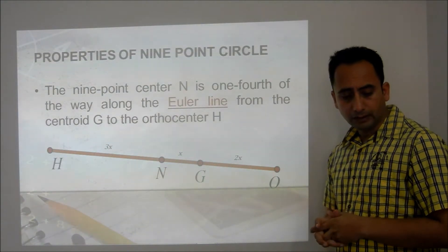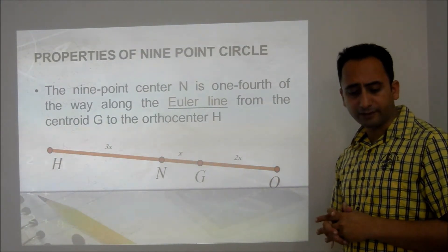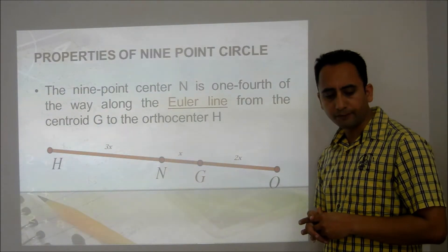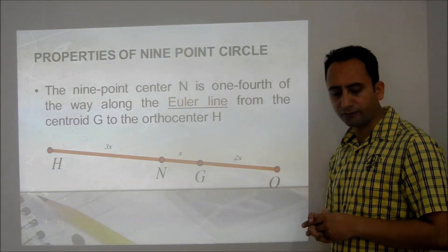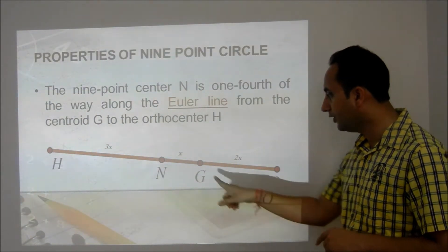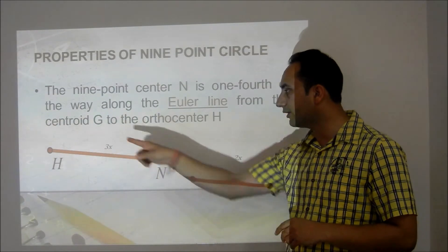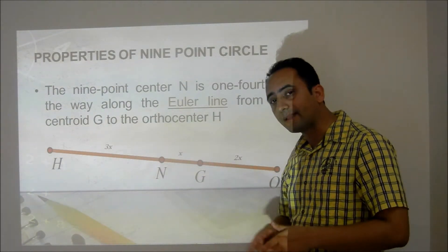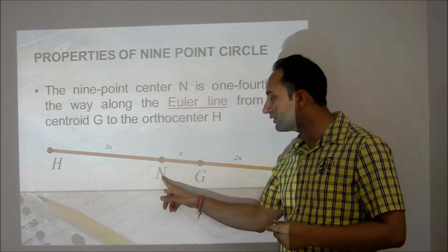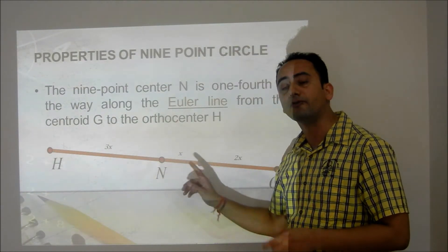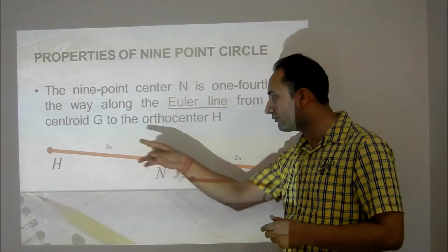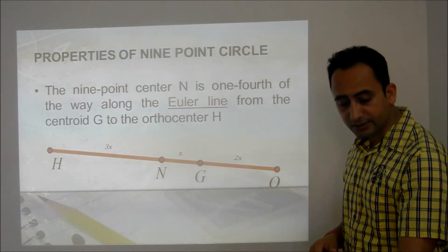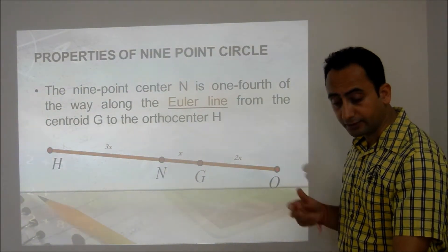The 9-point center N is one-fourth of the way along Euler's line from the centroid to the orthocenter. If the total distance HG is considered, the distance between the centroid and 9-point center will be one-fourth of the distance between H and G.